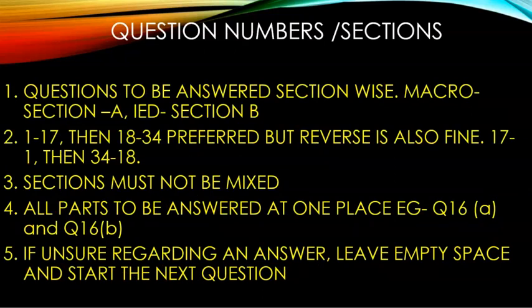Coming to the very important third heading: question numbers and sections. The biggest mistake we do is mix sections. You have to answer section-wise. I would prefer doing questions 1 to 17 first, then go for IED questions 18 to 34. Some kids prefer doing the 6-mark questions first when they are fresh — that is fine. But keep section A as 1 to 17 and section B as 18 to 34. Mixing sections is very confusing and you might lose marks.